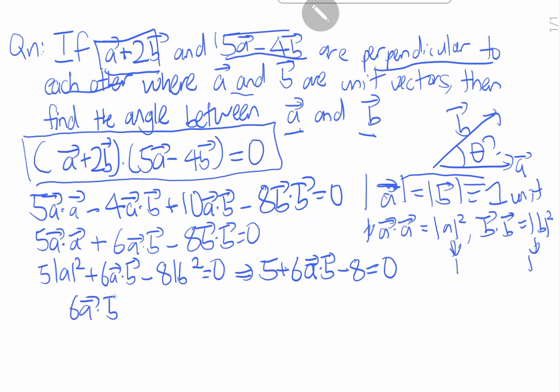Therefore 6ab equals to 3, therefore a dot b equals to half.